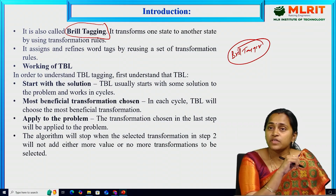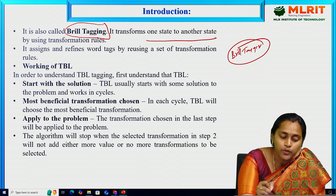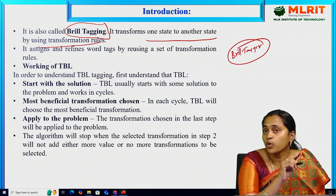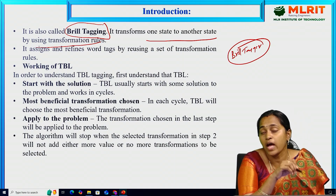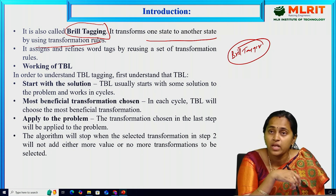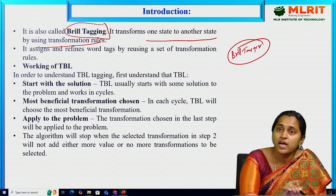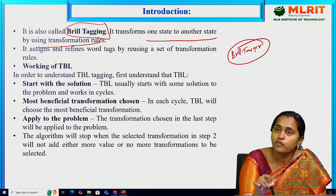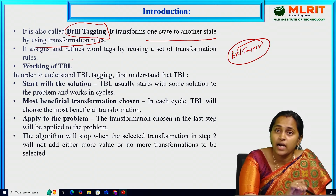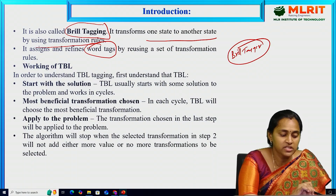The Brill tagger is one of the POS taggers. It transforms one state to another state by using transformation rules. For example, take machine translation — I am translating one language to another language by applying some rules. Based on transformation rules, I am transferring from one state to another state, and I am assigning and defining some word tags using those transformation rules.